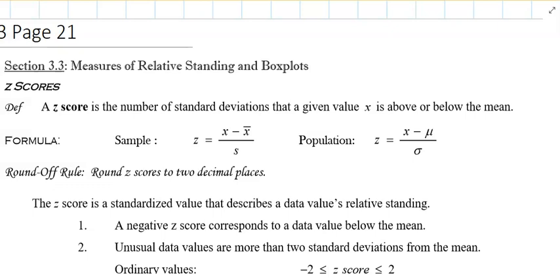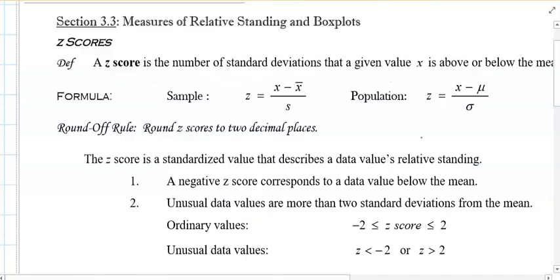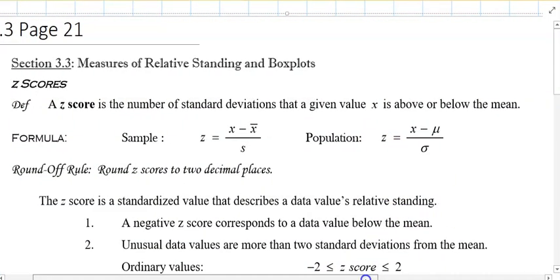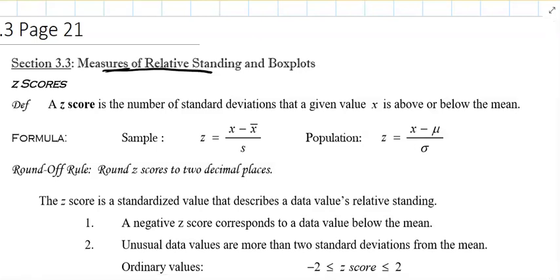Section 3.3 talks about measures of relative standing and box plots. This is a quick way of figuring out how far a score is from the average. A z-score is the number of standard deviations that a given value x is above or below the mean.